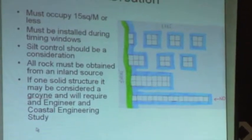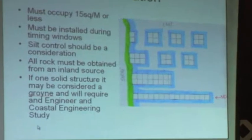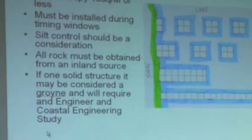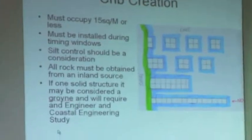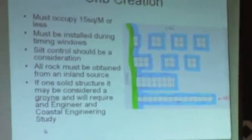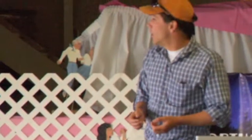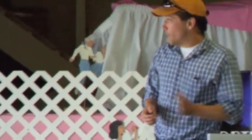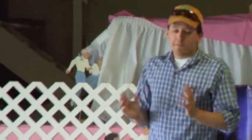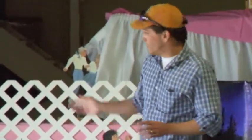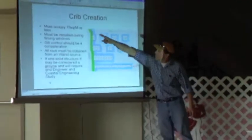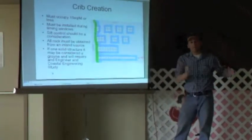Sediment control should always be a consideration. All rock used to fill cribs must be obtained from an inland source — no picking rocks off the shore, as that is fish habitat and destroying it is a fineable offense. The rock should be clean: no fines, not covered in clay — usually referred to as washed stone. If it forms one solid structure, it may be considered a groin and may require a coastal engineering study. We prefer structures with flow-through — types one and two — because they don't disrupt all of the shoreline processes.